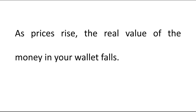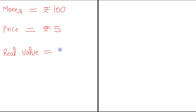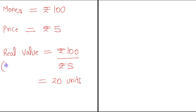As prices rise, the real value of the money in your wallet falls. Let's understand this with an example. Suppose the money you had in your wallet is rupees 100 and the price level in an economy is assumed as rupees 5. Then the real value of the money you had will be rupees 100 divided by rupees 5, which is 20 units. So basically, your purchasing power is 20 units.